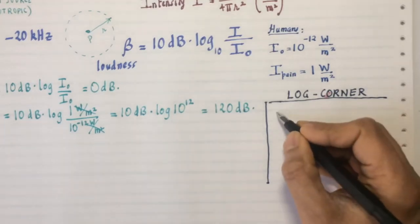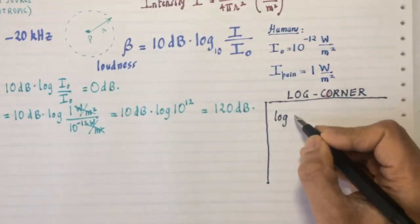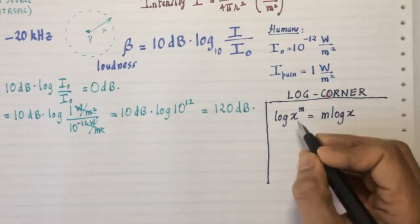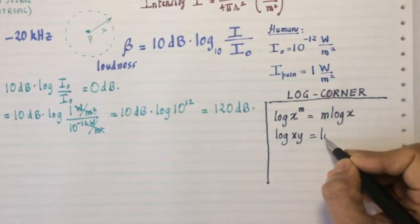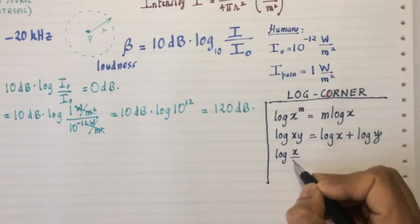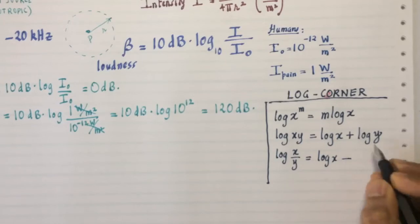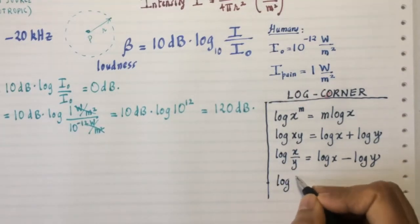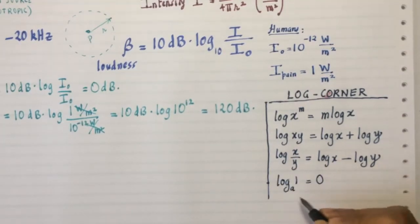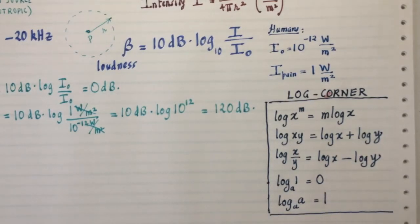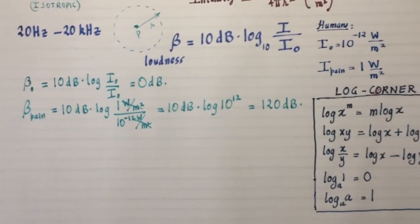So I'll call this log corner. Some popular things about logarithm that you should know are this applies to any base. Log x^m is m log x. The other thing is log xy is log x plus log y. Similarly, log x/y is log x minus log y. Then we have log of 1 to any base a is going to be 0. And then finally log of a to base a, for example, log of 10 to base 10 is 1. So these are the properties of logarithms that you should be quite comfortable with to work with decibels.